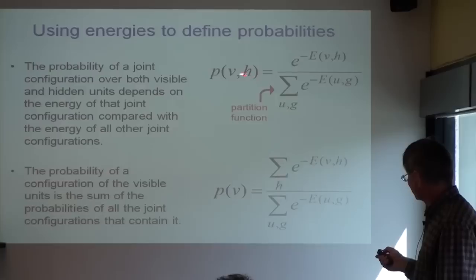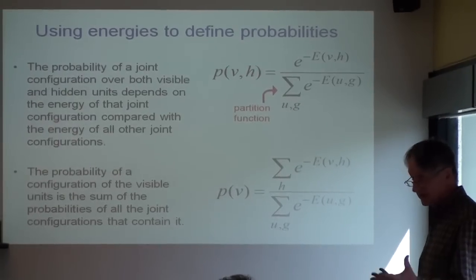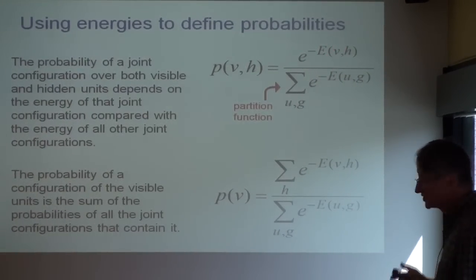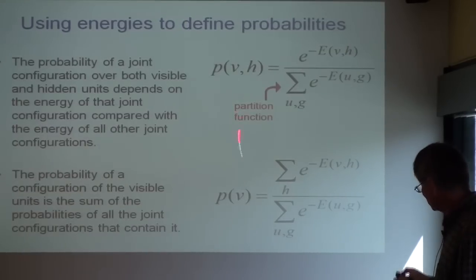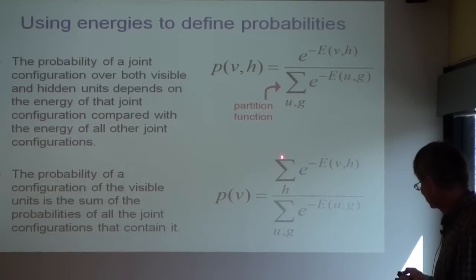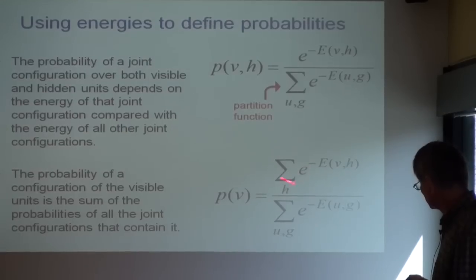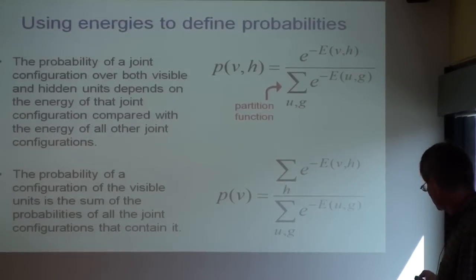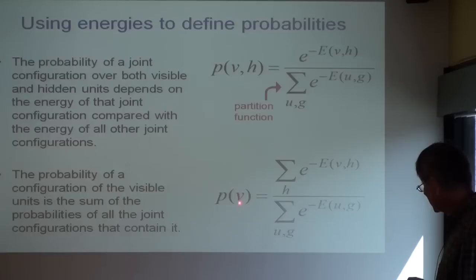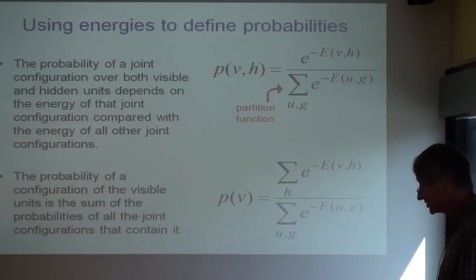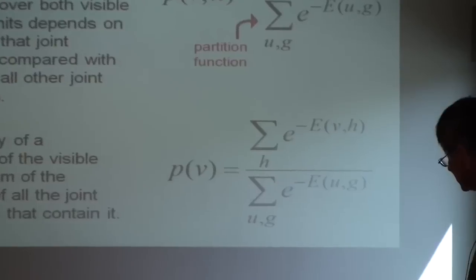The probability of a combined configuration given the energy function is e to the minus the energy of that combined configuration, normalized by the partition function. If you want to know the probability of a particular visible vector, you have to sum over all the hidden vectors that might go with it. If you want to change the weights to make this probability higher, you obviously need to lower the energies of combinations of a visible vector and a hidden vector that would like to go with it, and raise the energies of all other combinations.